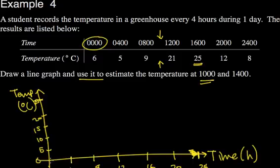Right, so we've got at 0, we've got 6 degrees, and then 4 o'clock is 5 degrees, 8 o'clock is 9 degrees, and it looks something like this. This isn't very good, but it should have the right sort of shape. OK.